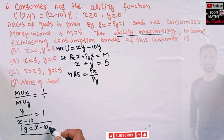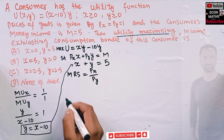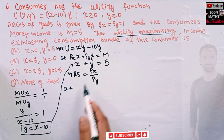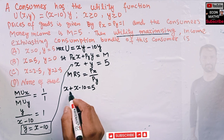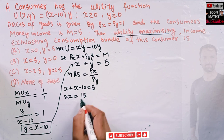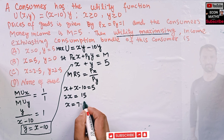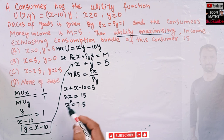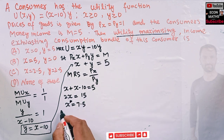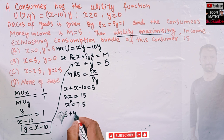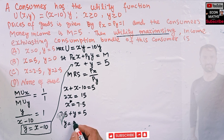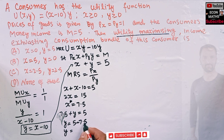Substituting y = x minus 10 into the budget constraint x plus y = 5 gives x plus (x minus 10) = 5, so 2x = 15, meaning x = 7.5. Then substituting x = 7.5 back into the budget equation: 7.5 plus y = 5, so y = 5 minus 7.5 = negative 2.5.